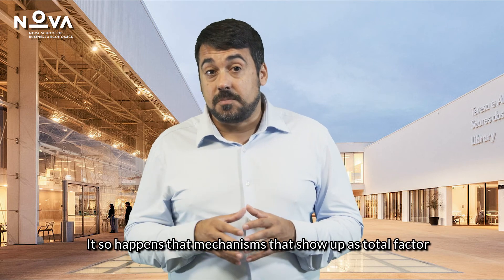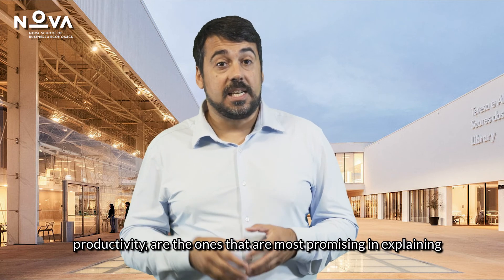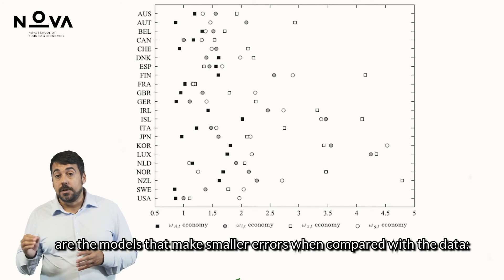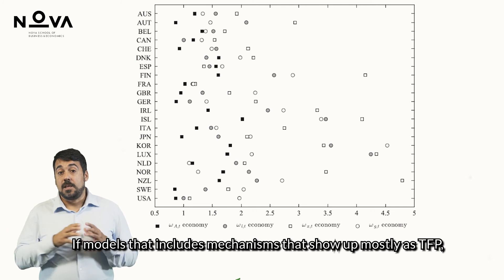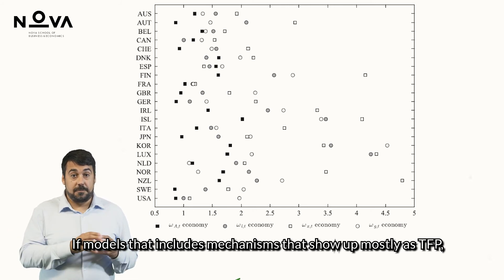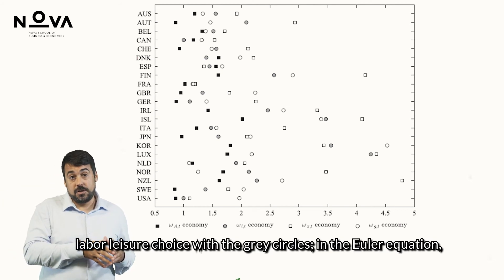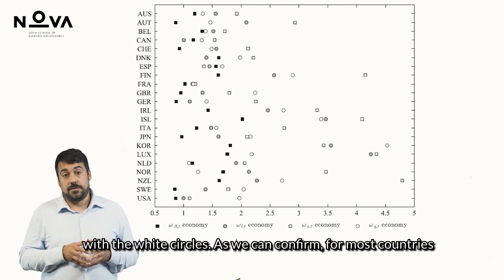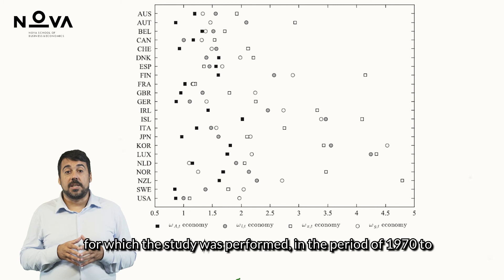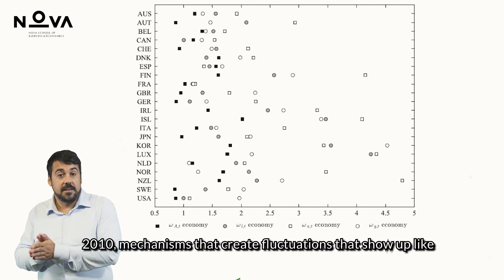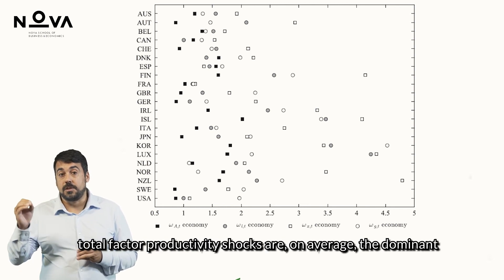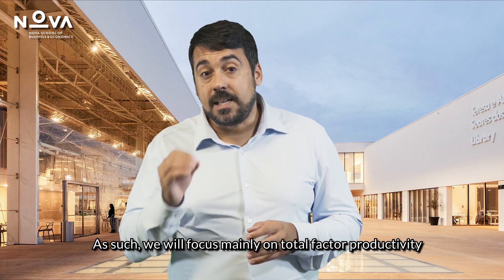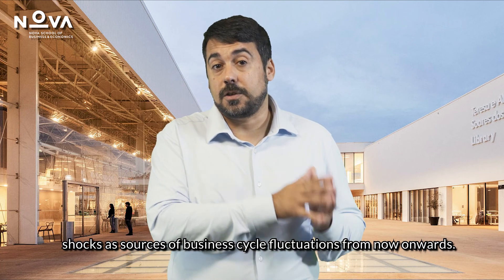It so happens that mechanisms showing up as total factor productivity are most promising in explaining most economic fluctuations. The plot shows, by country, which models make smaller errors when compared with data — whether mechanisms show up as TFP (black squares), in the labor-leisure choice (gray circles), in the Euler equation (white squares), or in the aggregate resource constraint. As confirmed, for most countries studied in the period 1970 to 2010, mechanisms creating fluctuations that show up like total factor productivity shocks are on average the dominant source of business cycle fluctuations. As such, we will focus mainly on TFP shocks as sources of business cycle fluctuations going forward.